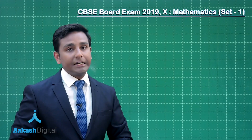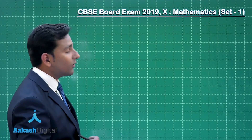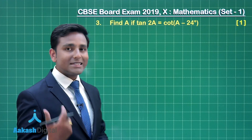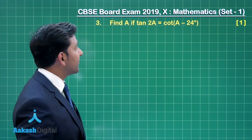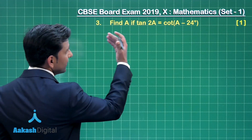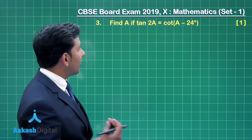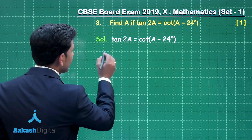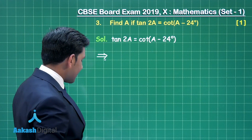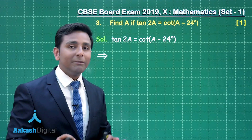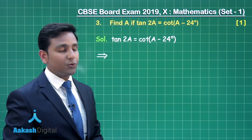Now let us solve question number 3. In this question you have a choice — you can solve either the first part or the second part. So first of all let us discuss the solution of the first part. This question is from introduction to trigonometry. We will solve this question using the concept of the relation between complementary angles in different trigonometric ratios.